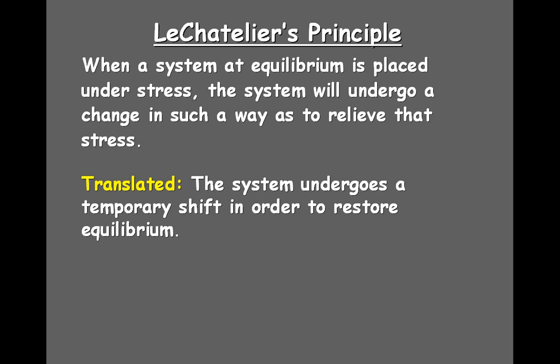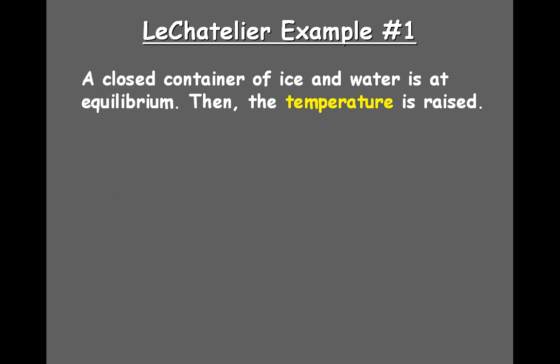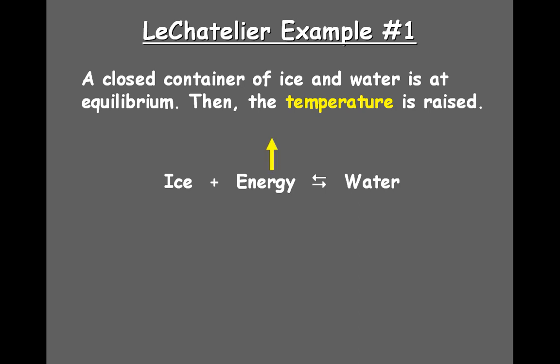Example one: in a closed container of ice and water at equilibrium, suddenly there is a temperature increase. The basic reaction is: ice plus energy produces liquid water. If we suddenly raise the temperature — that is, shove in more energy — there will be more energy for the ice to melt. So the reaction temporarily shifts to the right; the rate of the forward reaction increases temporarily. Eventually the system will reach equilibrium once some of that energy is used up, but there will be a temporary shift to the right. This is a change in energy.